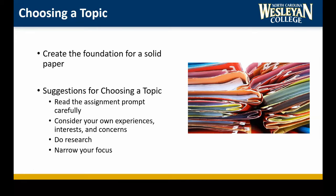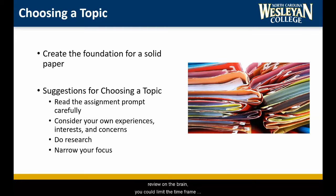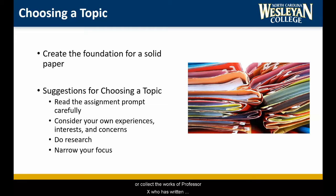Narrow your focus. If a topic proves to be too extensive, you can narrow your focus to research written during a specific timeframe, major publications in the field, a specific aspect of the topic, or the work of one researcher. For example, if you're doing a literature review on the brain, you could limit the timeframe to the last 20 years, only look for articles in the Journal of Neurobiology, focus on research on telepathy, or collect the works of Professor X, who has written over 20 articles on the topic. You don't have to narrow that far, but a few limitations can make writing the review more manageable.